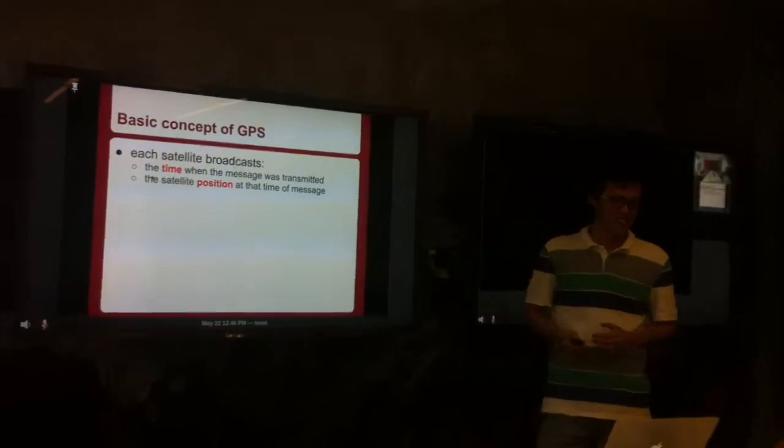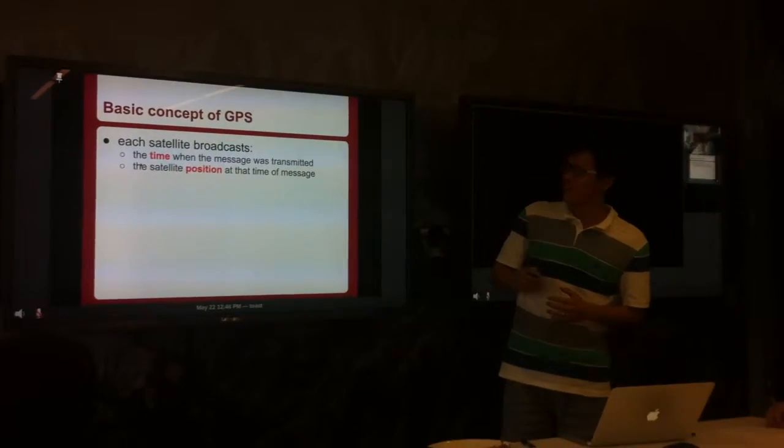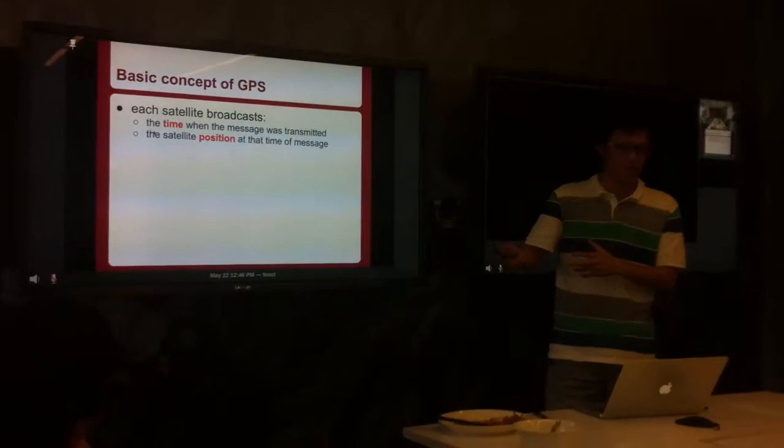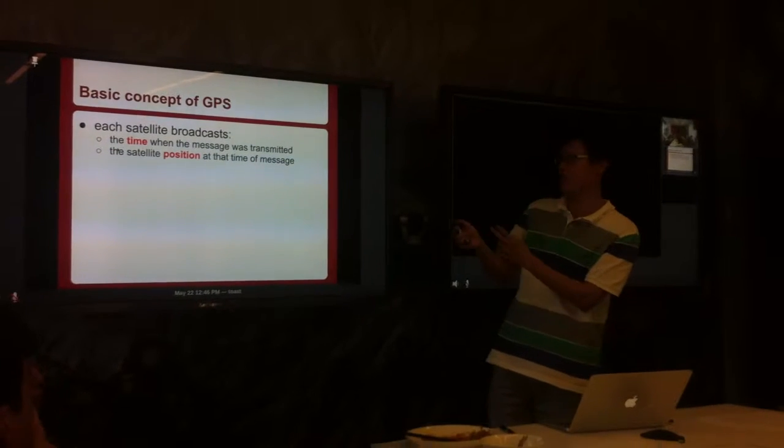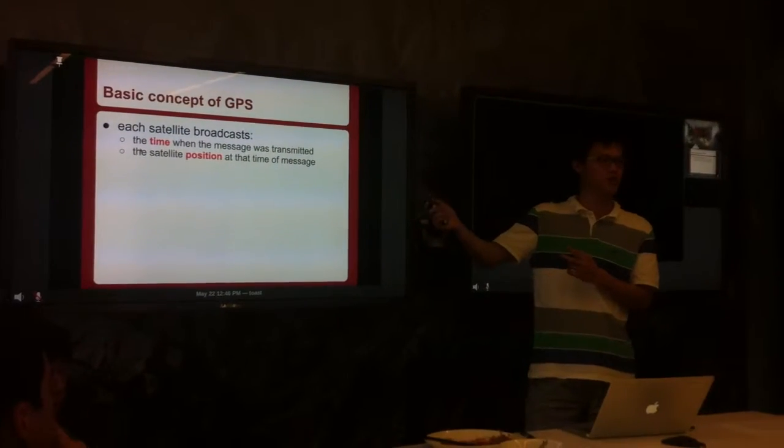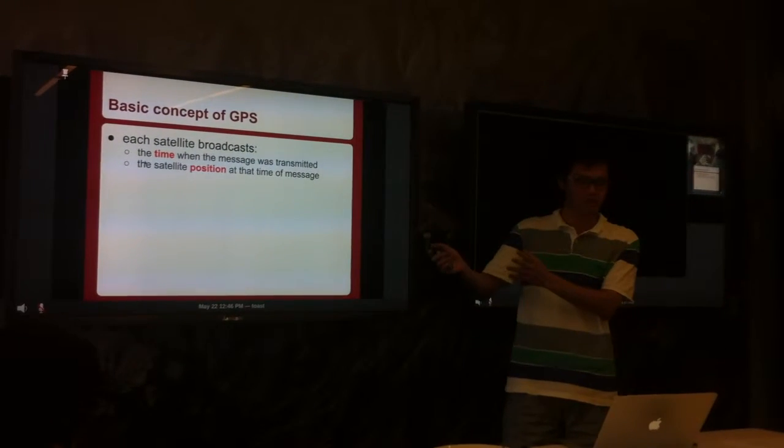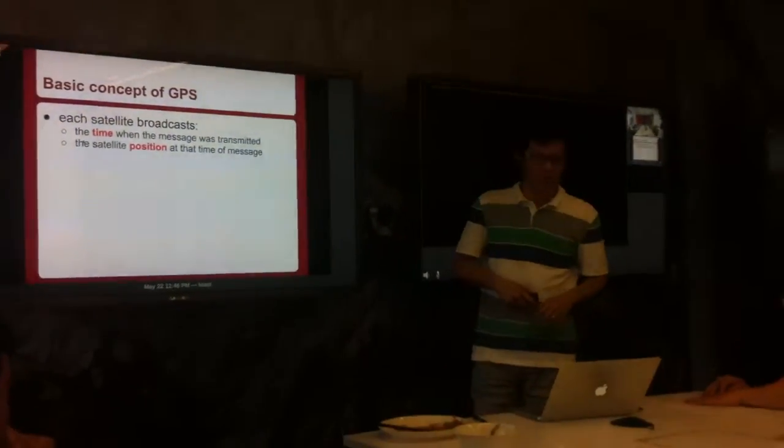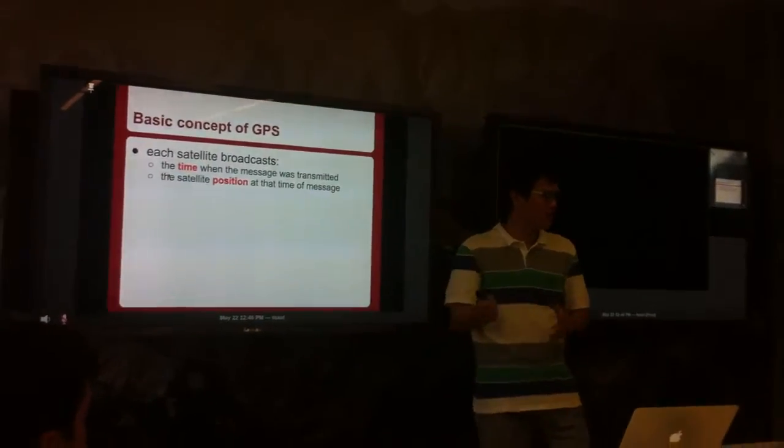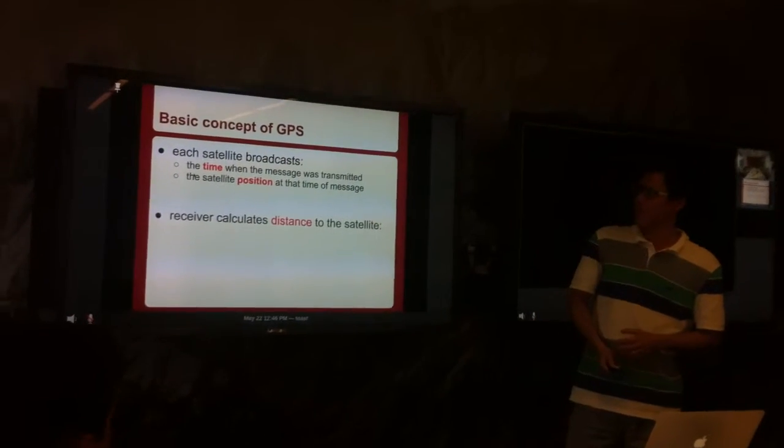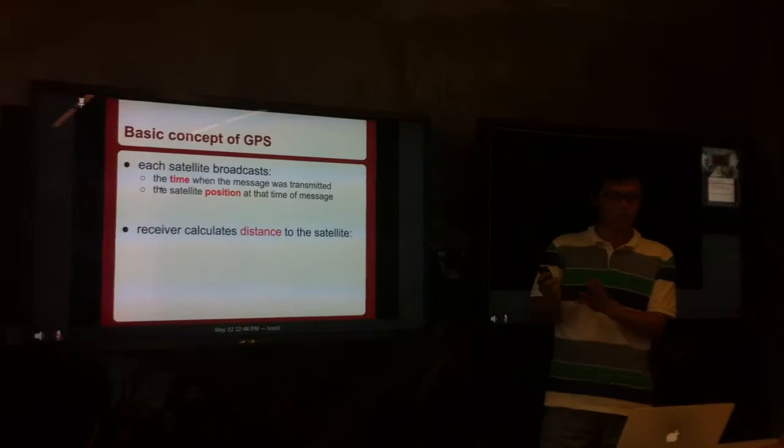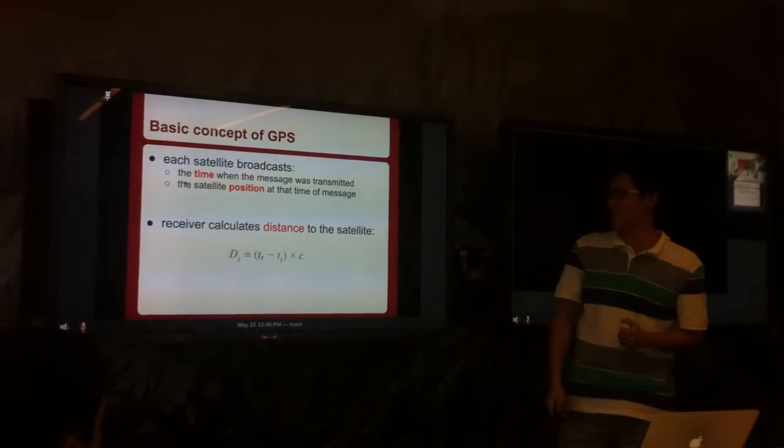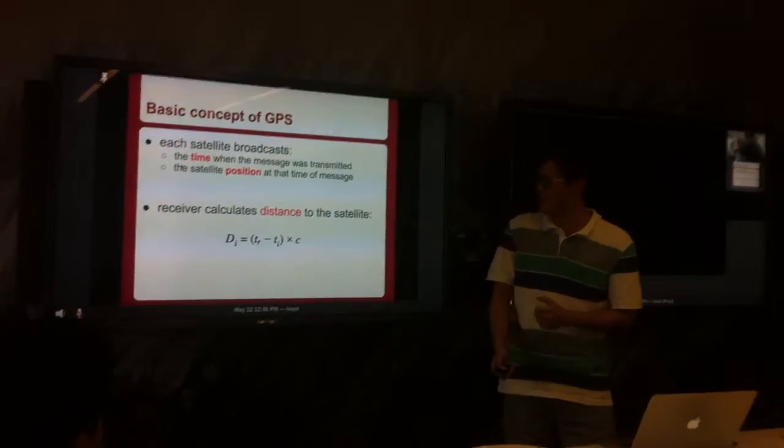So how does it work? This is the important part. First, each satellite broadcasts its message continually to the receiver. The message contains two important pieces of information. One is the time when the message was sent, and the other is the location or position of that satellite. It's like the satellite says, 'Hey, I'm in this position and it's now 9 o'clock.'